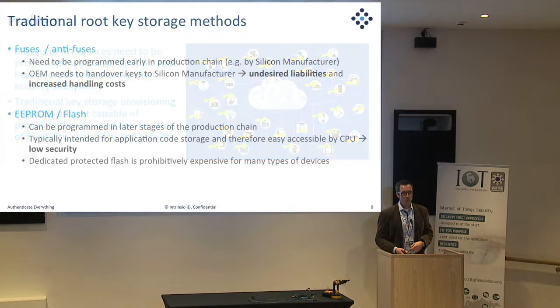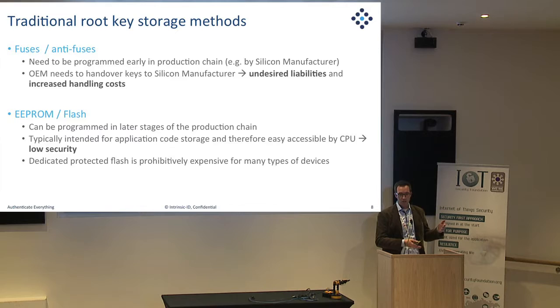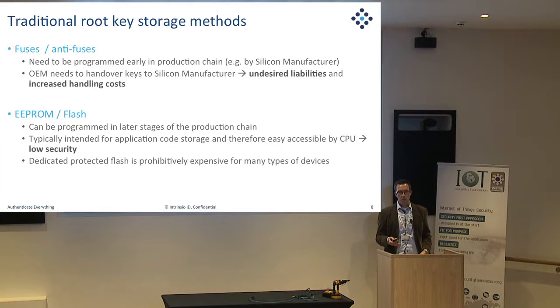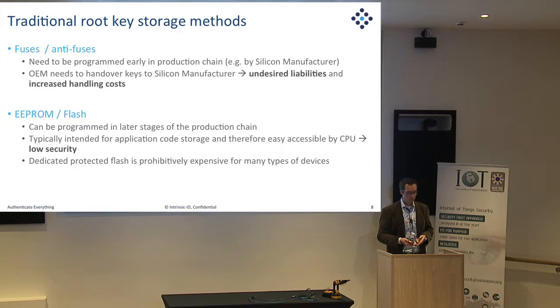One basic method to store cryptographic keys is in fuses. But in most cases, fuses need to be programmed very close to the silicon manufacturer — at the test cycle when the silicon is being produced, or very shortly after, because later in the field you don't always have access. This means an OEM who wants his keys in the chip needs to hand those keys over to the silicon manufacturer, creating an obvious vulnerability and liability. It also adds a costly infrastructure.